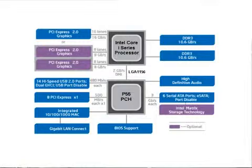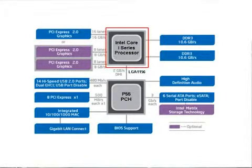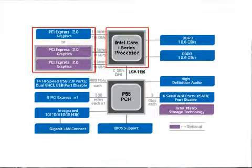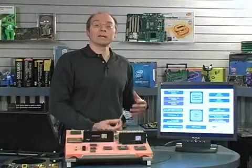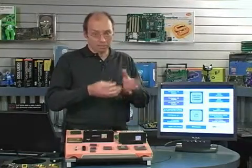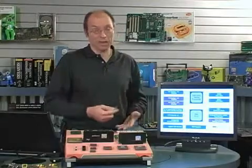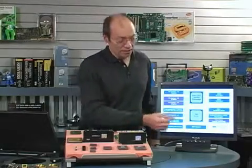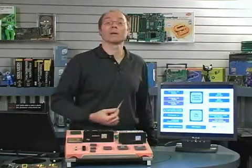This chip does all the same functions as the Southbridge did in other motherboard designs. In certain models of the i-series processors, we have not only the memory connection — memory modules connected directly to the processor — but also the video connection. By building the video connection into the processor, Intel is able to sell processors with built-in video while still having slots on the motherboard where you can plug video in. So Intel is getting into the video game even more strongly; instead of video built into their chipsets, it's now being built into their processor.